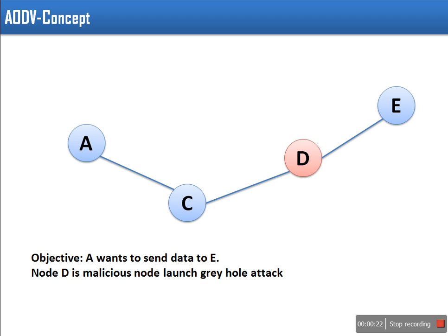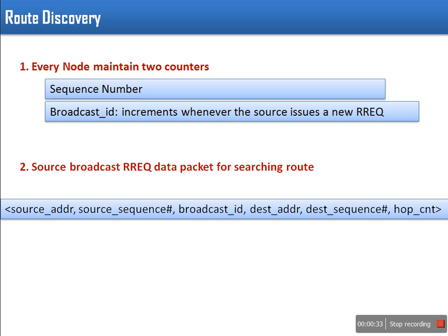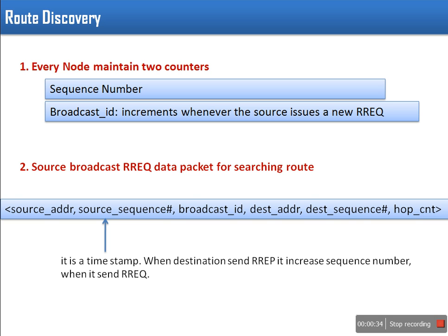Here we are taking four nodes, and node D is the malicious node showing the gray hole, launching gray hole attack. So let's have a quick review of AODV routing protocol.